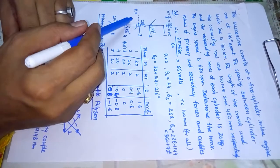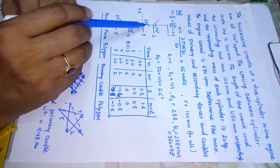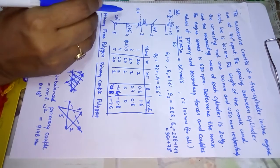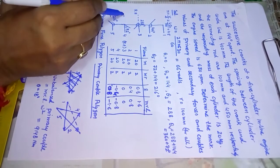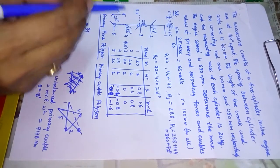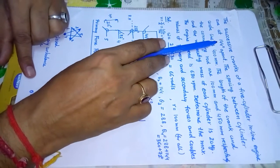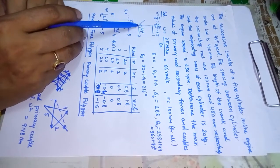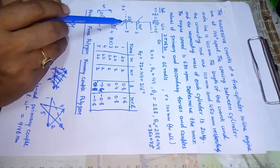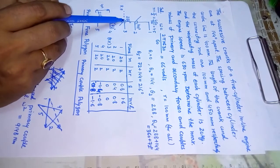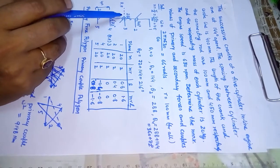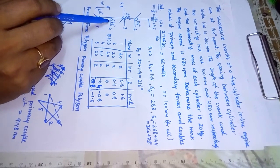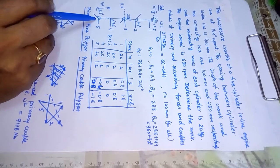We have drawn 5 cylinders: 1, 2, 3, 4, and 5, with a distance of 400 mm between any two adjacent cylinders. The crank angles are increasing by 144 degrees. For cylinder 1 the angle is 0; cylinder 2 is 0 + 144 = 144; cylinder 3 is 144 + 144 = 288; cylinder 4 is 288 + 144 = 432, subtract 360 giving 72; and cylinder 5 is 72 + 144 = 216. These are the angular positions.